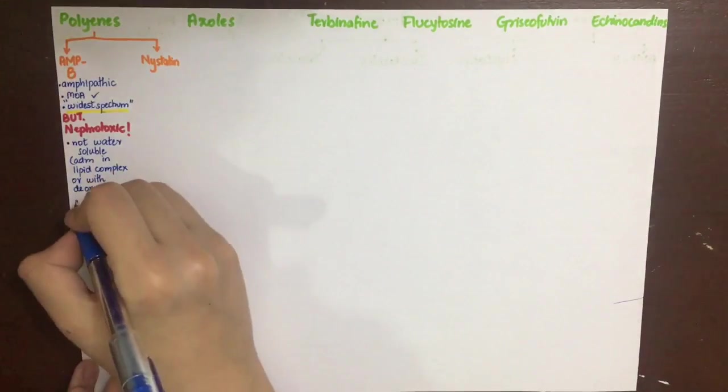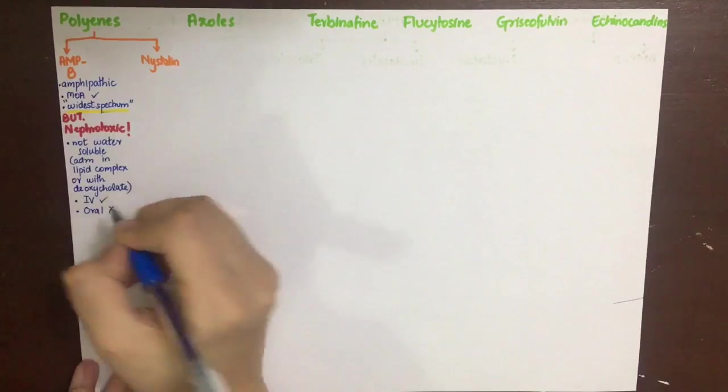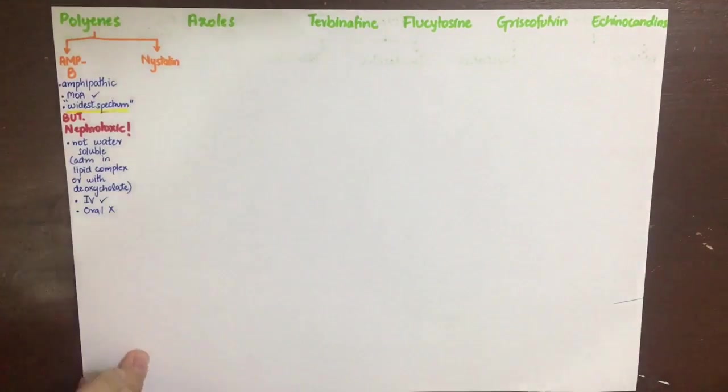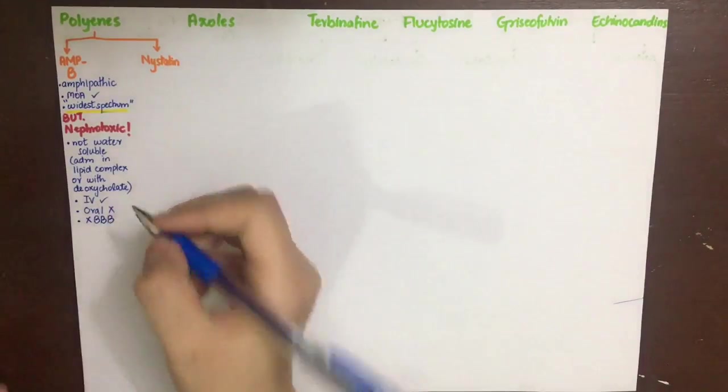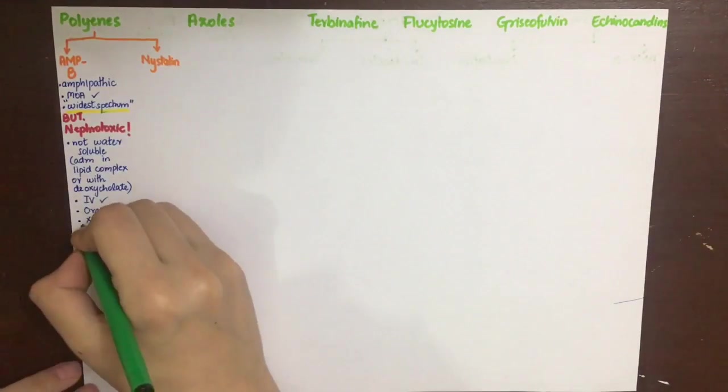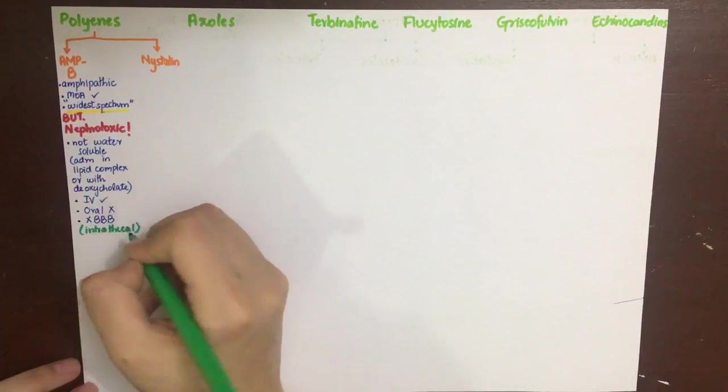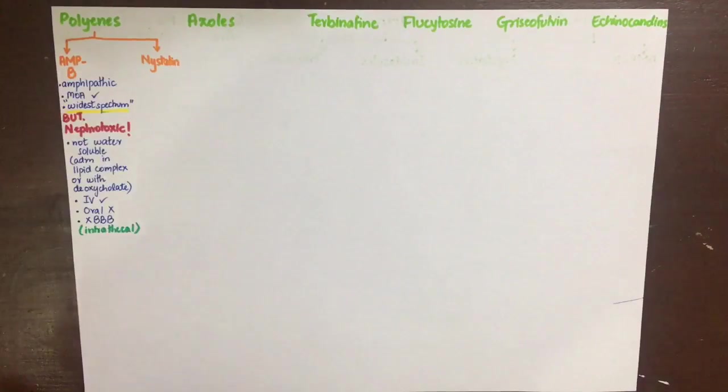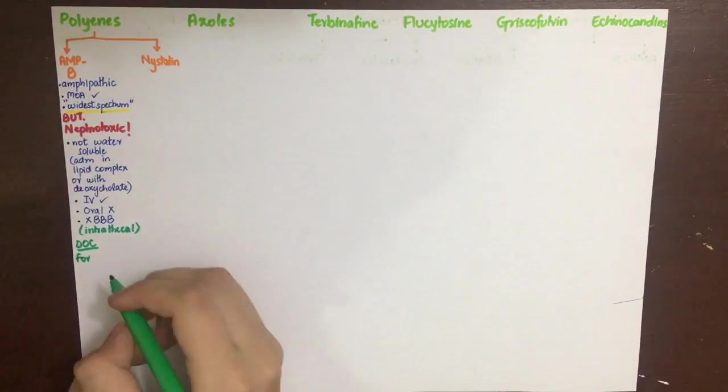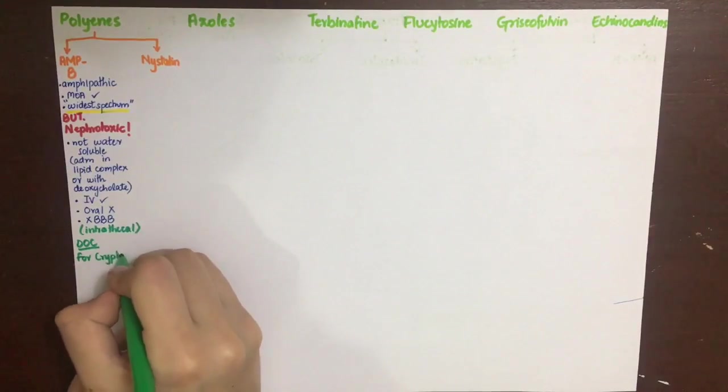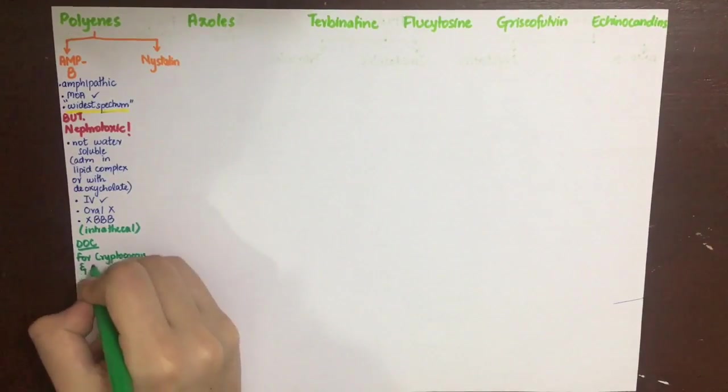Intrathecal injection is a dangerous process and can lead to side effects such as convulsions or headaches. It is considered the drug of choice for systemic infections by cryptococcus or mucor. It has the widest spectrum and is effective against many other fungi such as candida, aspergillosis, blastomyces, histoplasma, sporothrix, and mucormycosis.